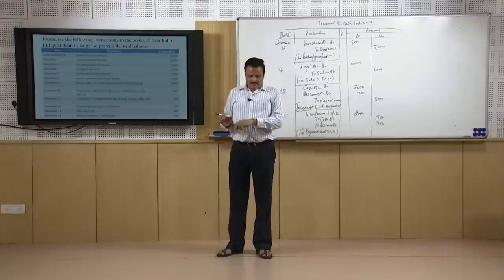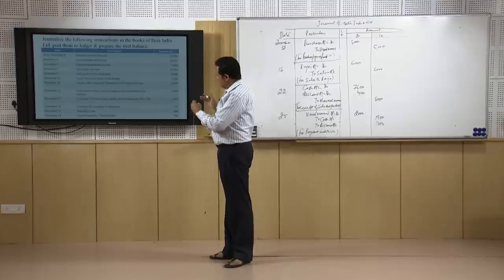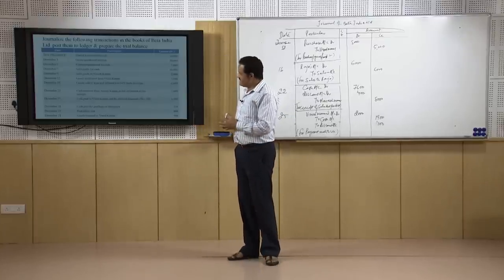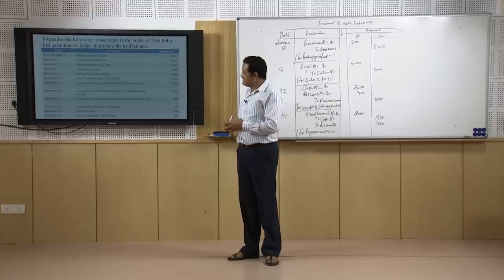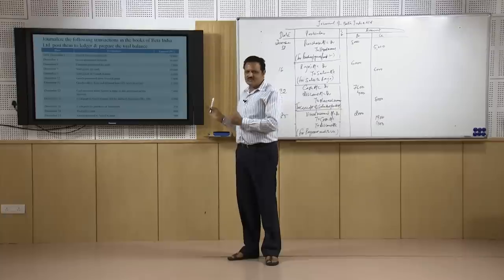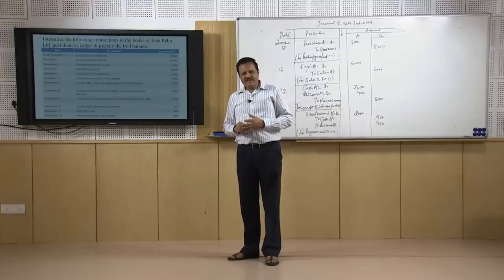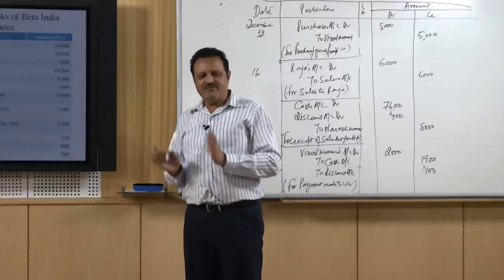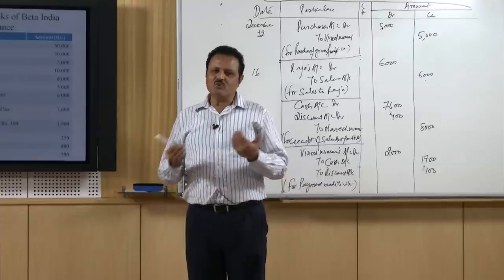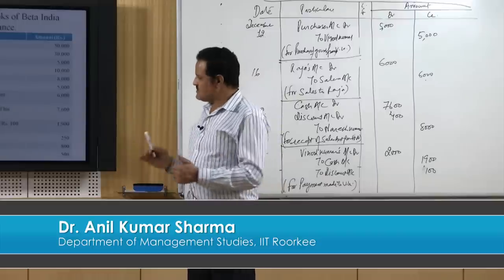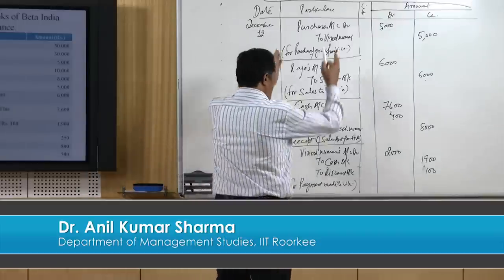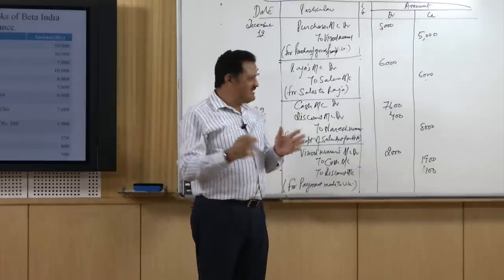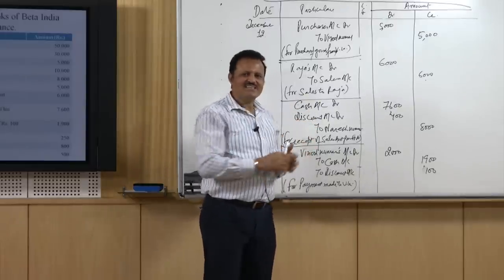I will stop here and the remaining entries are a kind of homework for you. The remaining three entries — on December 28, December 31, and again December 31 — try to pass these journal entries yourself. In my next lecture I will start from here, pass these three entries, and from there onwards we will move to the next step: learning how to post the transactions recorded in the journal into the ledger, how to classify these transactions, and how to prepare the ledger. Thank you very much.